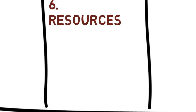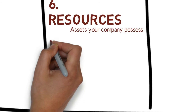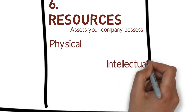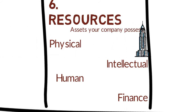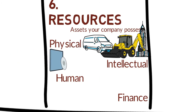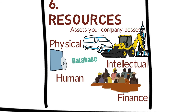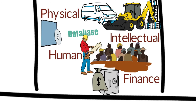The sixth is key resources. Key resources describes the most important assets required to make a business model work. Resources can be categorized into physical, intellectual, human, and financial. Physical resources can be infrastructure, vehicles, logistics, machines, and inventories. Intellectual resources can be patents, copyrights, and customer databases. Human resources include the skilled workforce or manpower. And financial resources, as you all know, is the capital — which is a key resource.